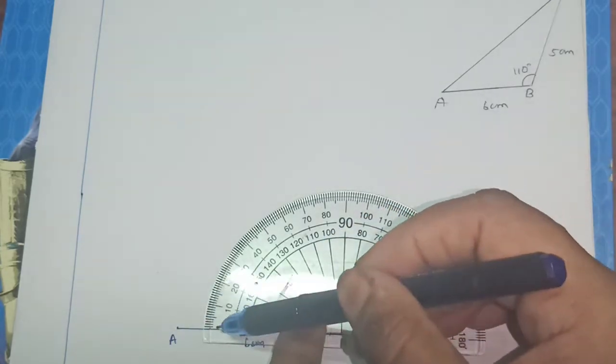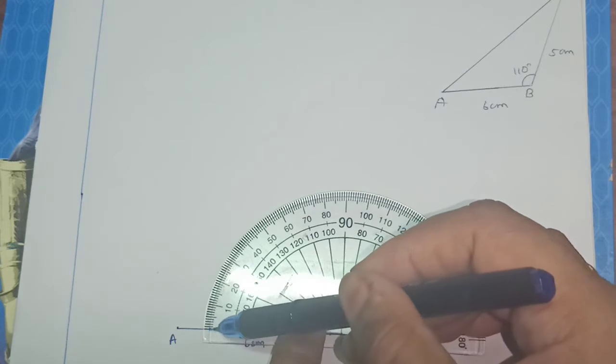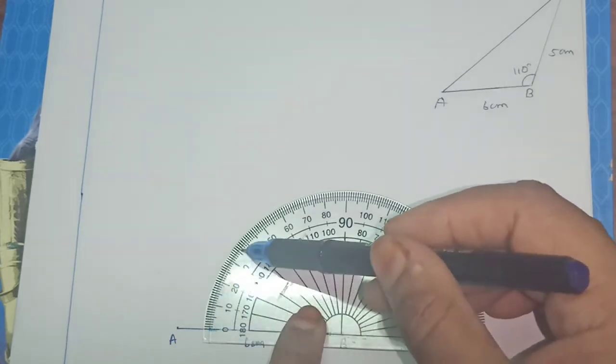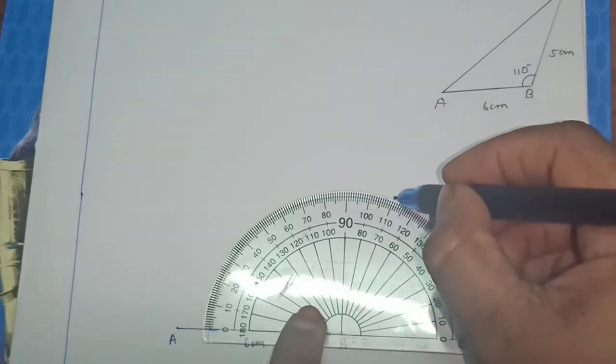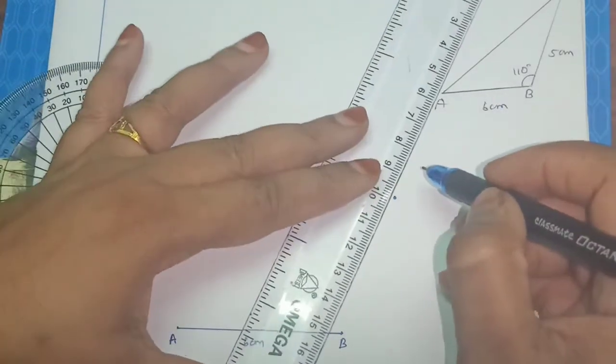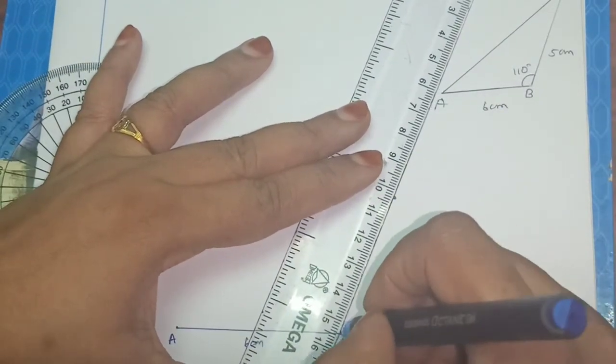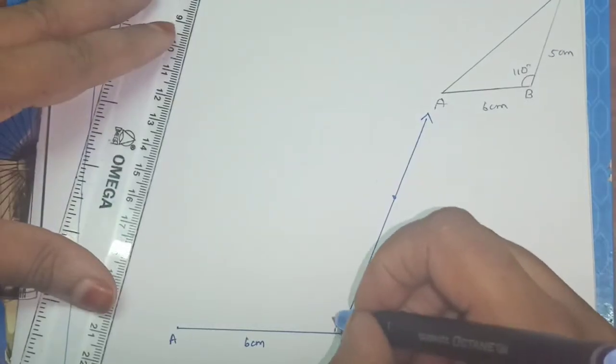Here only we are going to make an angle, so here where this line, outer scale. So here only start 0, this 0, the outer scale you should see. So where is 110 degrees? Here, 110 degrees. So now we have to join with B. Now we constructed a ray with this 110 degrees.